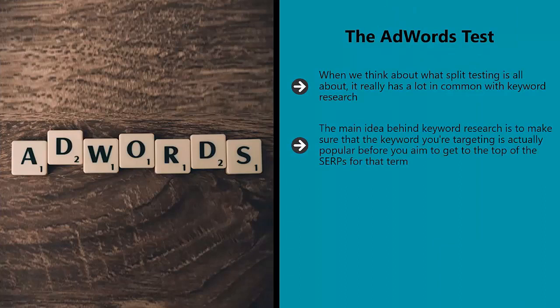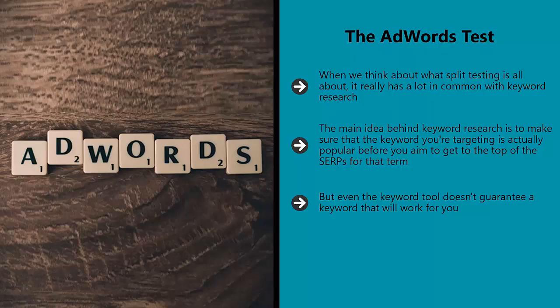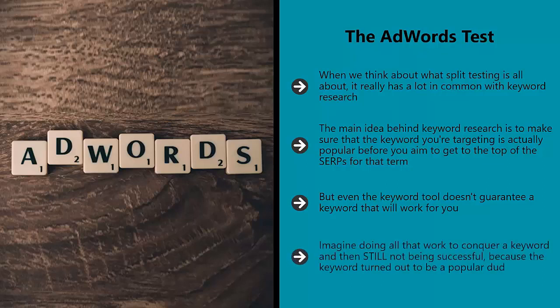That's the exact same thing we see with split testing — we're trying to make sure a strategy is successful before we use it. But even the keyword tool doesn't guarantee a keyword that will work for you. Even if you can land the most popular keyword in the world, you might still struggle with your CTR, or you might find that the intent behind the keyword isn't right for you — in other words, the people who search that phrase aren't interested in buying your product. Imagine doing all that work to conquer a keyword and then still not being successful because the keyword turned out to be a popular dud. So instead, why not try spending a week at the top of a few and then choose the best one?